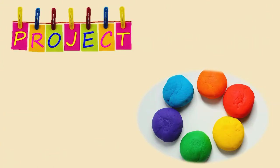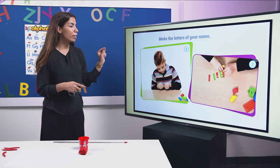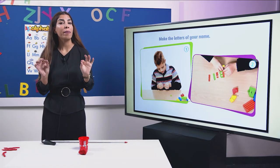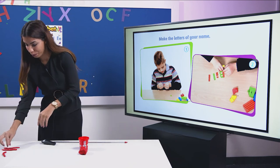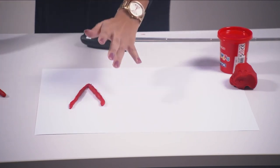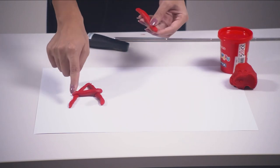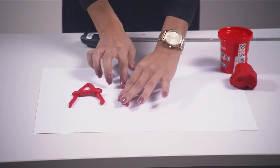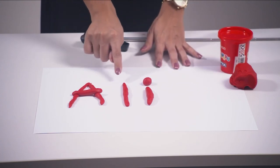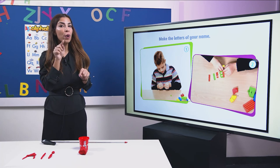And now, it's project time. Look what I need you to do. I need you to bring some clay or play-doh. With the play-doh, you are going to make the letters of your own name. I will write the name Ali with my play-doh. I will make the letter A — I choose the red colour because it's my favourite. You can choose whatever colour you like. This is A, then the letter L, and the letter I. A-L-I, Ali. Now, dear students, it's your turn. With the play-doh, make your own name.